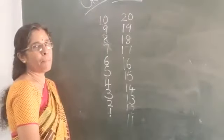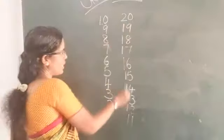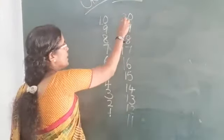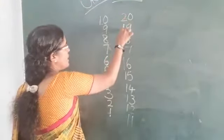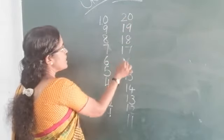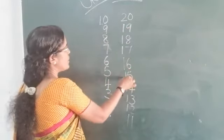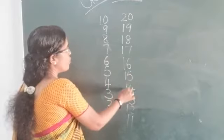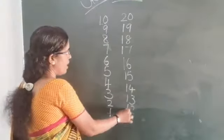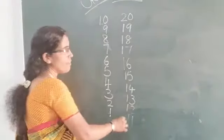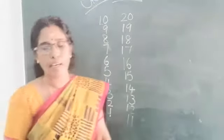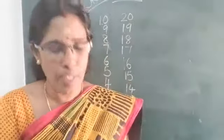Okay, this is 20 to 11 — what are you going to count? 20, 19, 18, 17, 16, 15, 14, 13, 12, 11. You are going to be counting backward counting.